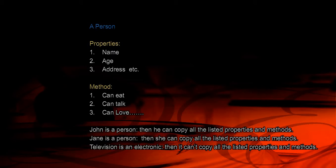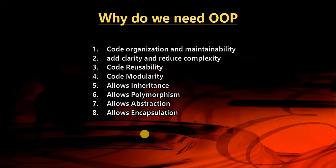A person can eat, talk, and love. If we create an instance of this person class, then John — being a person — can copy all the listed properties and methods. Jane is also a person, so she too can copy all the listed properties and methods. However, television is an electronic, not a person, so television cannot copy those properties and methods — television cannot be an instance of the class called Person.